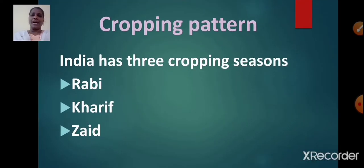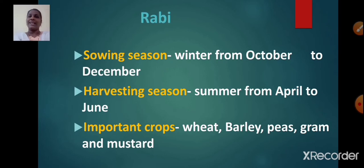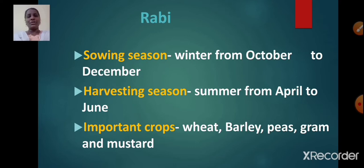Now let us learn about cropping pattern. India has three cropping seasons: Rabi, Kharif and Zaid. Rabi crops are sown in winter from October to December and harvested in summer from April to June. Important Rabi crops are wheat, barley, peas, gram and mustard.